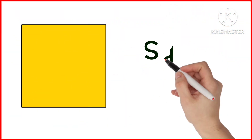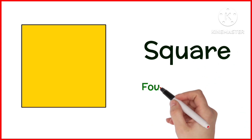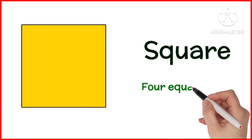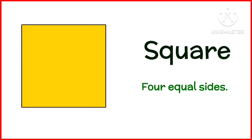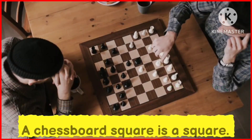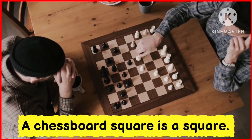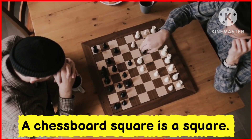Square. Square has 4 equal sides. A chess board is a square.